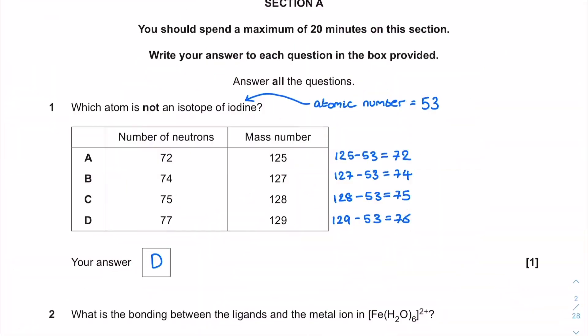With question one we've got which atom is not an isotope of iodine. We've got a number of neutrons and the mass number for these individual isotopes of iodine. The atomic number of iodine is 53 on the periodic table. I've taken the mass numbers and subtracted from them the atomic number to get what should be the correct number of neutrons. Going down the list we can see that it matches up for all of them until we get to the very final one where we would expect a number of neutrons equal to 76 but actually the table has 77 and so the correct answer here is D.